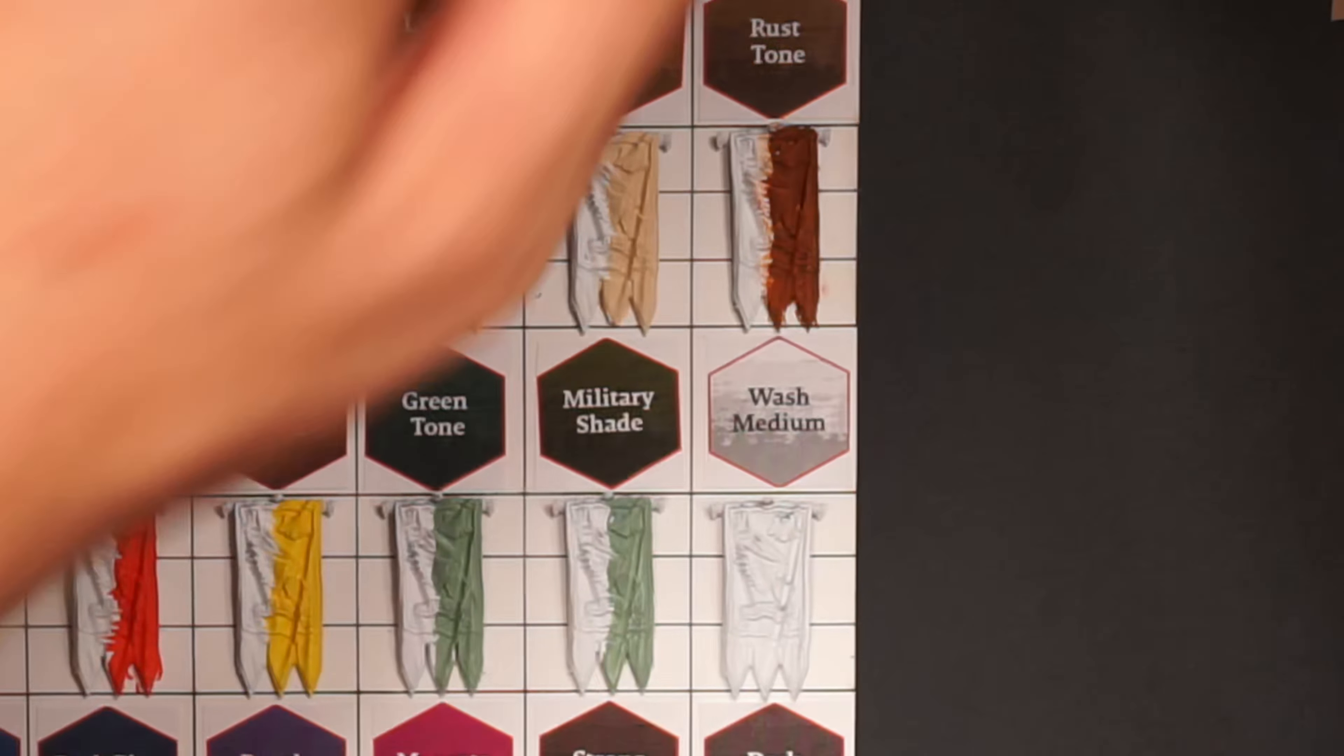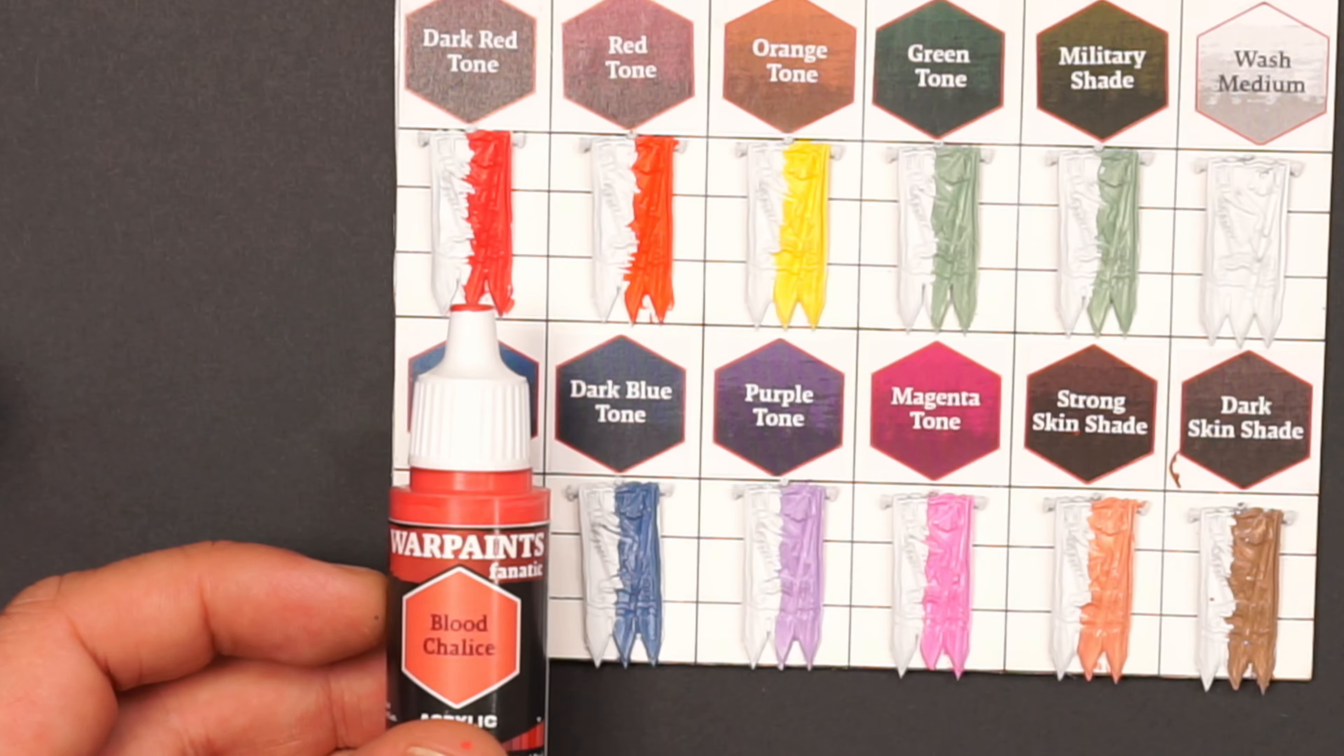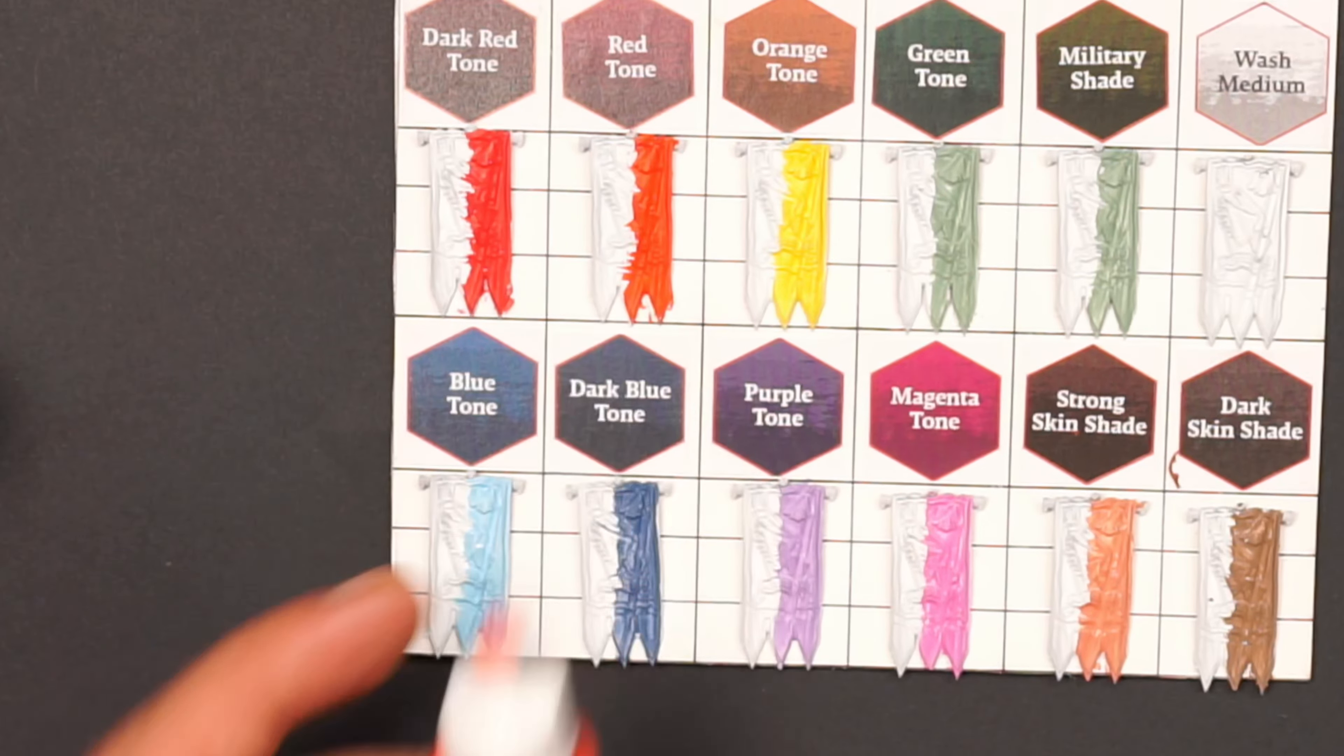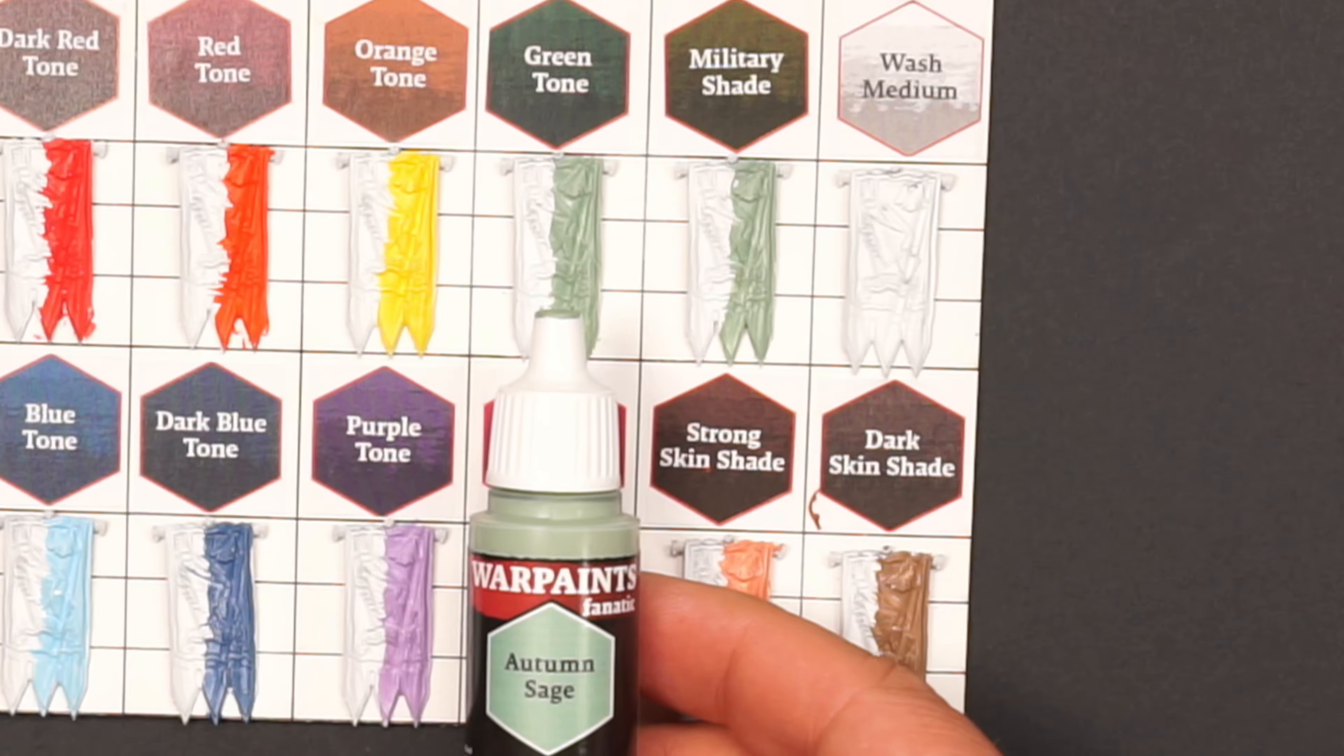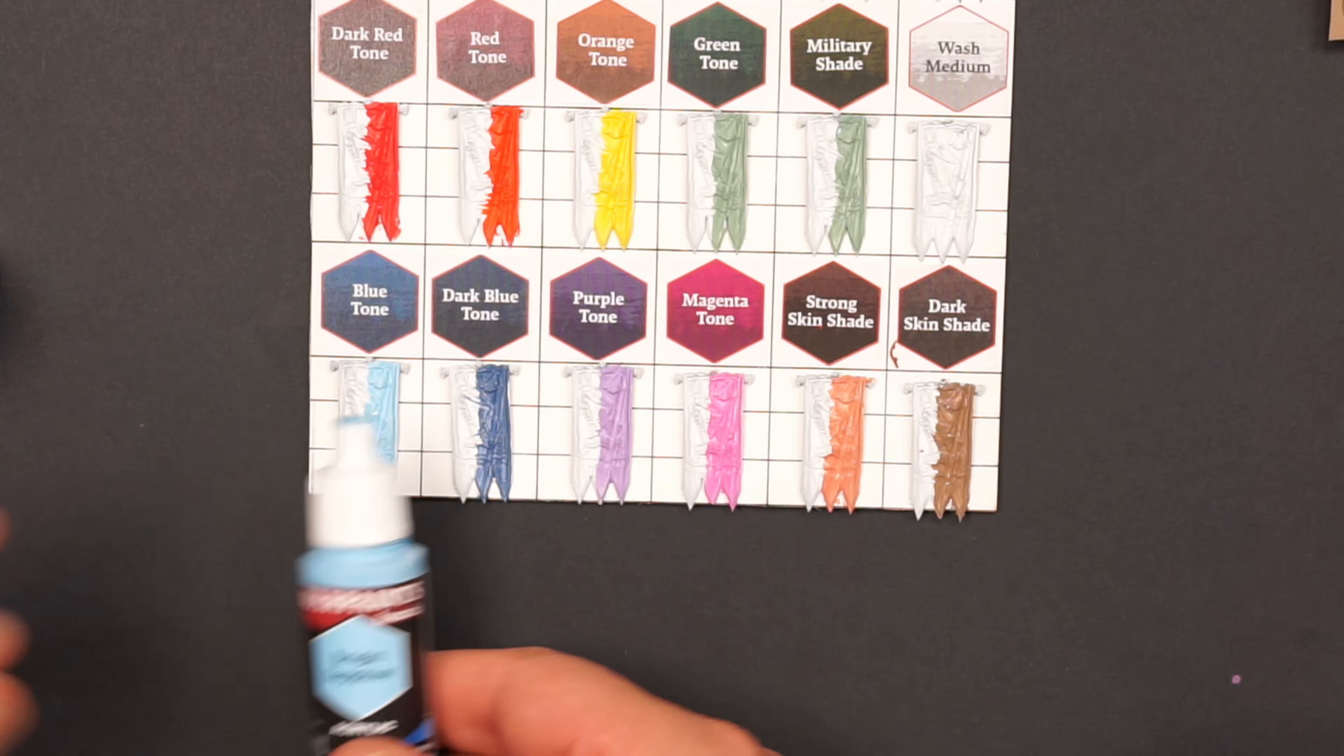For the rust tone I used two of the effect paints, the dark rust and the fresh rust, and I think these will go nicely hand in hand with the rust tone. Some blood colors for the dark red tone, and the angelic red for the red tone. Background for the orange tone will be the demonic yellow. I used the autumn sage for both the green tone and the military shade.